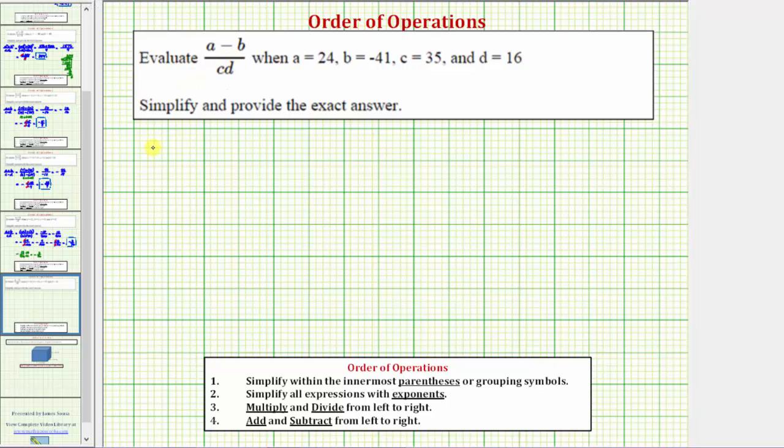So beginning with the given expression, we have the quantity a minus b divided by cd, which means c times d. And now we'll perform the substitution. When performing the substitution, we'll put the values in parentheses. The numerator a minus b would be 24 minus negative 41, and the denominator c times d would be 35 times 16.